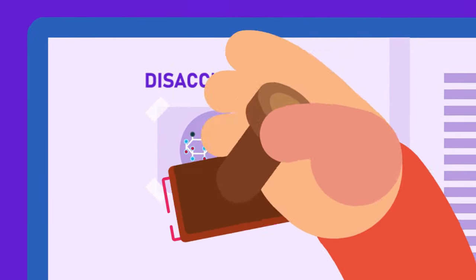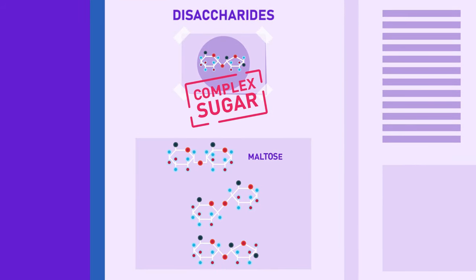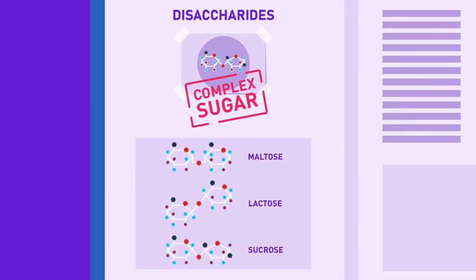Disaccharides are also known as complex sugars, as they have complex chemical compositions. Maltose, lactose and sucrose are their examples.